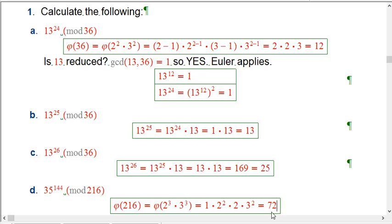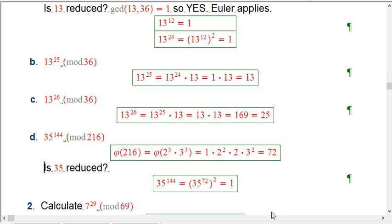So now the phi function is a bit bigger, but once again, I have contrived it to be nice. 35 is 5 times 7, so it's definitely relatively prime to something that only has 2s and 3s in it. Euler's theorem applies. 35 to the 144 is just 35 to the 72 all squared, and that equals 1.